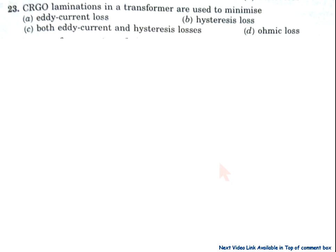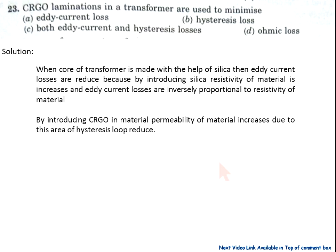Question number 23: CRGO — cold rolled grain oriented steel laminations in a transformer are used to minimize — A) eddy current losses, B) hysteresis losses, C) both eddy current and hysteresis losses, D) ohmic losses. Solution: when the core of the transformer is made with the help of silicon, eddy current losses are reduced, because by introducing silicon the resistivity of the material increases, and eddy current losses are inversely proportional to the resistivity of the material.